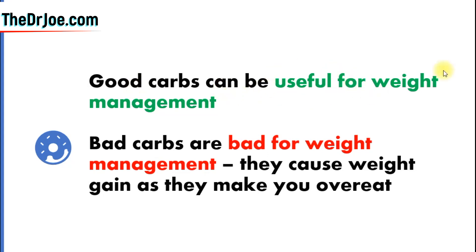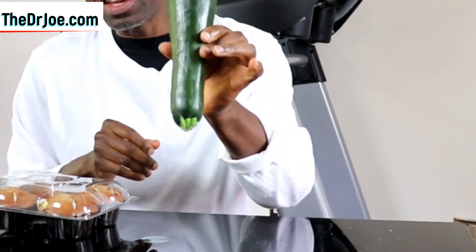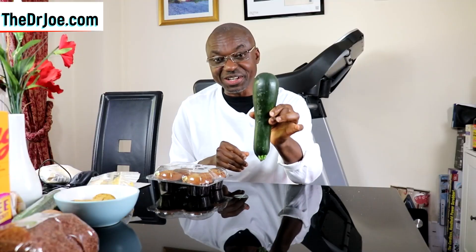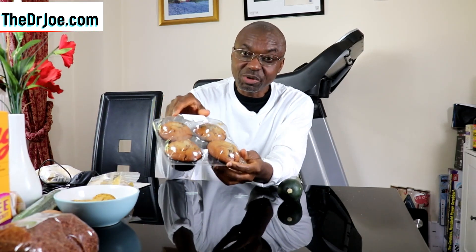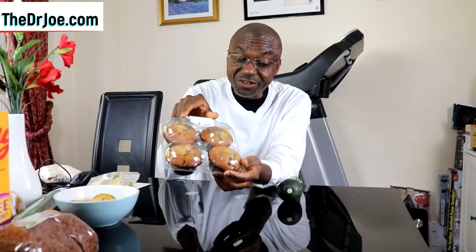Good carbs can be useful for weight management, and bad carbs on the other hand are bad for weight management — they actually cause weight gain as they make you overeat. This is zucchini, or courgette depending on where you live — this is a good carb, good for weight management. On the other hand, these blueberry muffins are bad carbs and bad for weight management.